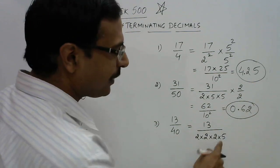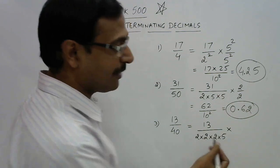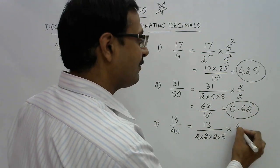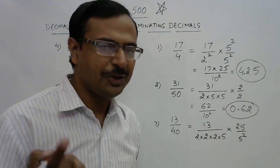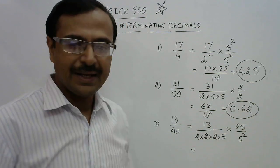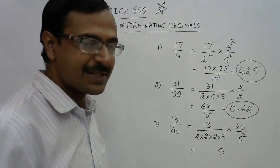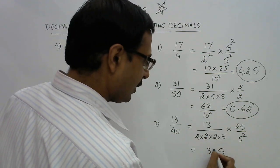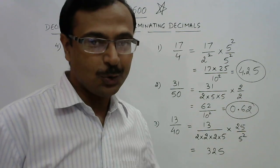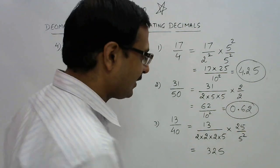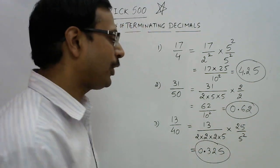So let us take one more example: 13 upon 40. 13 upon 40 means 13 upon 2, 2, 2 and 5, which is 8 into 5. Now what is the deficit? Deficit is 2 fives, because we have 3 twos and 1 five, so we need 2 more fives, which means multiply by 25. Now just multiply the numerator: 13 into 5 is 65, so 6 carry; 13 into 2 is 26 plus 6 is 32. This is 2 cubed, which is 10 cubed, which means 1000, so the answer is 0.325.